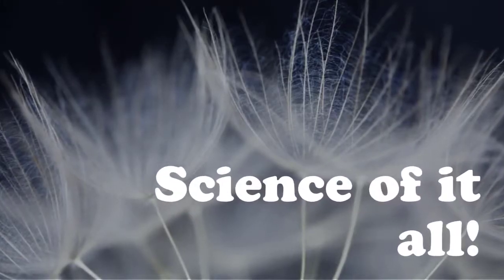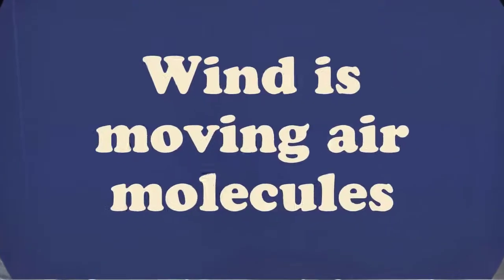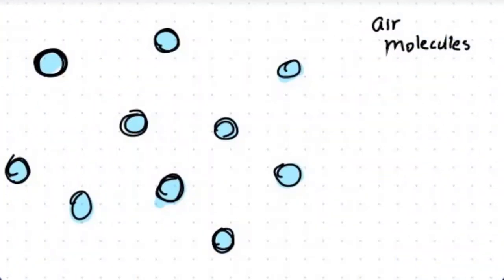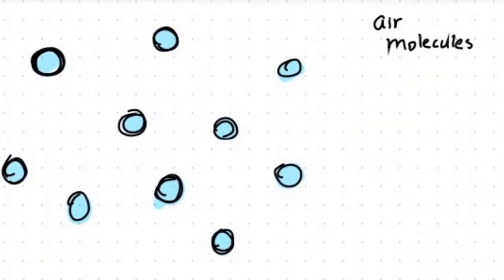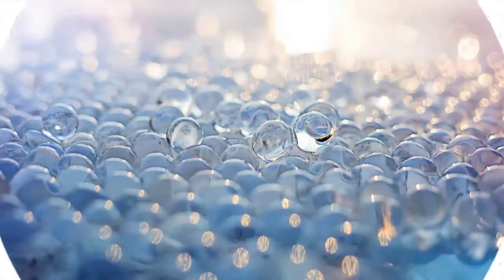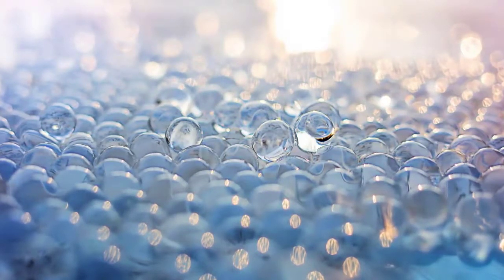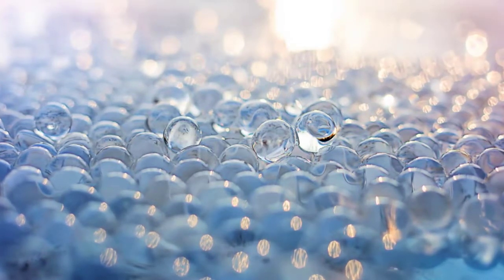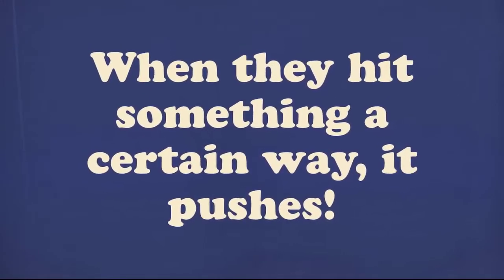Let's explain how seeds use the wind to travel. What is wind exactly? Wind is moving air molecules. You can think of these air molecules as little balls just floating in the air. Stop a moment and think — if you had a bunch of little balls and you threw them at something, what would happen? If you threw enough of them and you threw the balls hard enough, it'll move the object that you're throwing them at. A similar idea goes for air molecules.